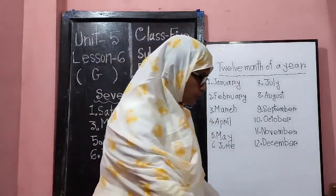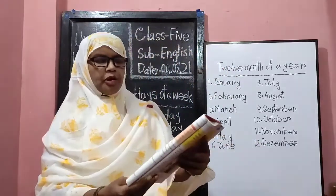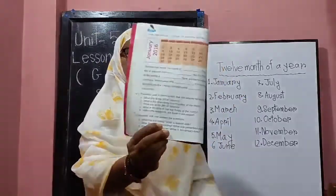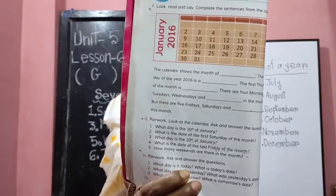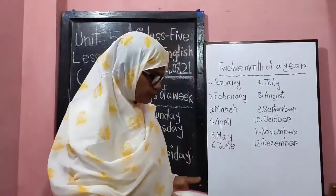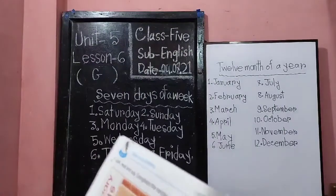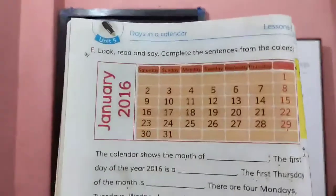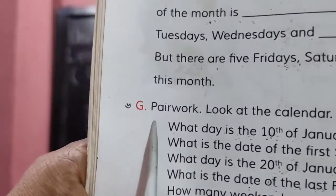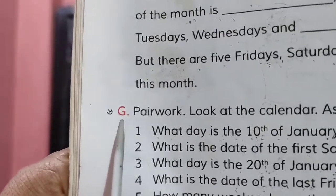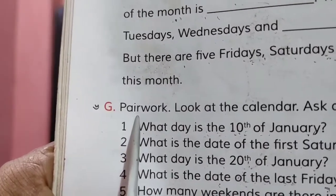Okay, thank you. Students, now open your book at page 20 and look at point G. What is here? This is point G. What's the instruction? I'm reading — listen to me attentively.